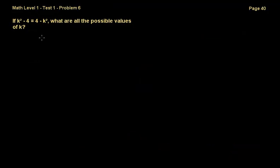On to problem 6. If k squared minus 4 is equal to 4 minus k squared, what are all the possible values of k? You can just go ahead and solve for k. If we move k squared to the other side, we get that k squared plus k squared, and we move 4 to the other side, is equal to 4 plus 4. So 2k squared is equal to 8. And then if we divide both sides by 2, we get that k squared is equal to 4.